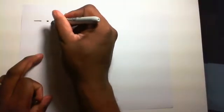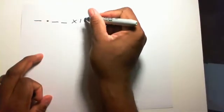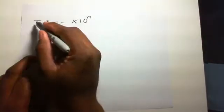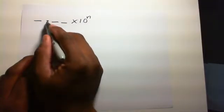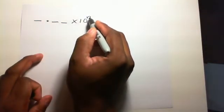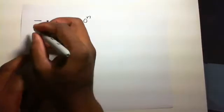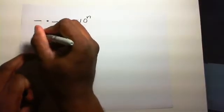The topic of this video is scientific notation. Scientific notation is a way to write very large or very small numbers in a compact way. Scientific notation takes this form: you have three digits with the decimal point here, times 10 to the nth power.